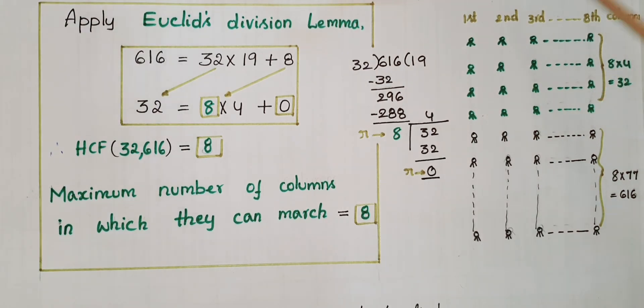Now, you can see from this figure here this is an army band and this is an army contingent. Here there are 8 columns because HCF is equal to 8. There are 8 columns for each group. Here there are 8 columns for army band, then 32 by 8 is equal to 4 members. So in each column there are 4 members. And for an army contingent there are 8 columns and 616 by 8 is equal to 77. In each column there are 77 members.